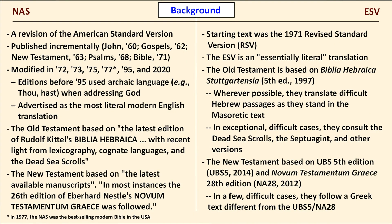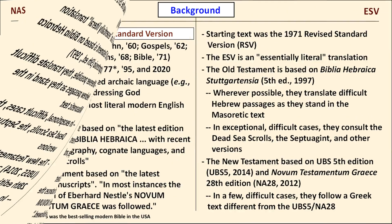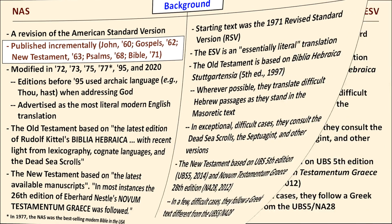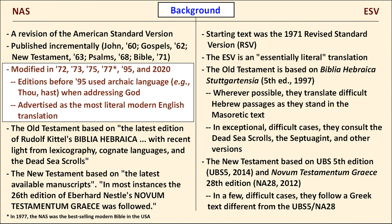A few details on the history and translation philosophy for both are presented here. The NAS is derived from the American Standard Version; the goal was to produce an evangelical alternative to the Revised Standard Version. It was published in increments beginning with the Gospel of John in the 1960s, with the complete Bible in 1971. The 1995 update removed the archaic 'thee' and 'thou' when referring to God, deleted a number of conjunctions, and replaced some pronouns with proper names. The NAS is advertised as the most literal modern English translation, but by my measure of literalness, that isn't so.